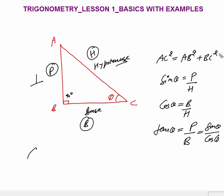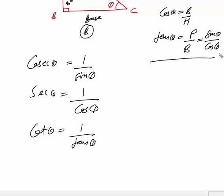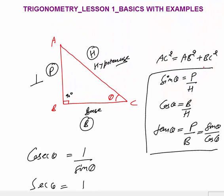Related to sine, cos, and tan are the reciprocal functions: cosec theta = 1/sine theta, sec theta = 1/cos theta, and cot theta = 1/tan theta. Cot is the reciprocal of tan, sec is the reciprocal of cos, and cosec is the reciprocal of sine. Most importantly, remember: sine = P/H (perpendicular by hypotenuse), cos = B/H (base by hypotenuse), tan = P/B (perpendicular by base).